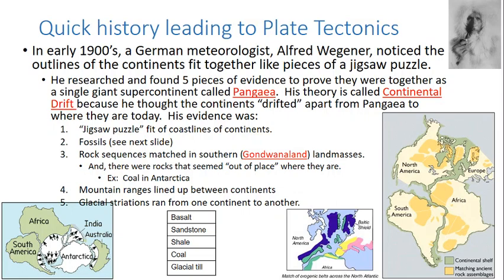Alfred Wegener was a German meteorologist who did most of his work in Greenland in the early 1900s. During World War I, he was injured — he had a neck wound — and while he was laying in the hospital, he looked at a map of the world and noticed that the edges or the outlines of the continents fit together like pieces of a big jigsaw puzzle.